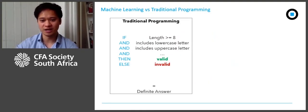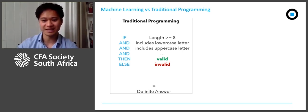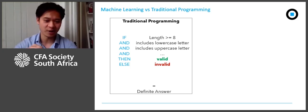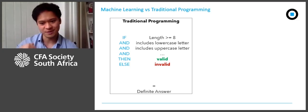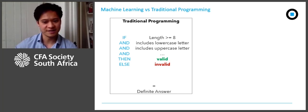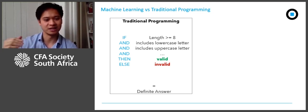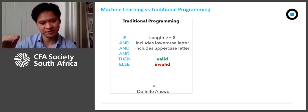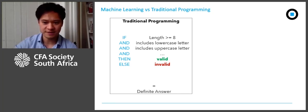I'm going to start with a stylized example differentiating machine learning from traditional programming, and that's validating a password. A 1950s computer scientist using old school programming would have a process that looks like this: you'd enter a password and the program goes through if-statements to determine if the password you entered is valid. Does the password have eight characters or more? Does it include a lowercase letter? Does it include an uppercase letter? Et cetera.